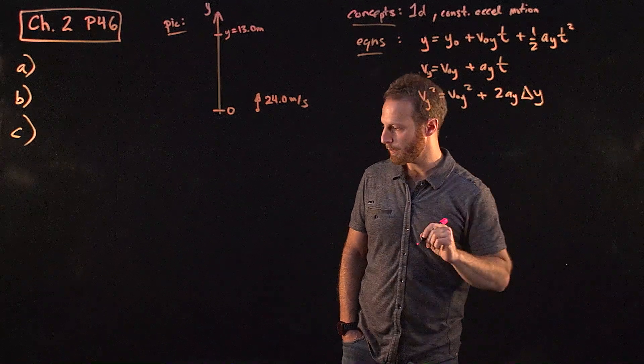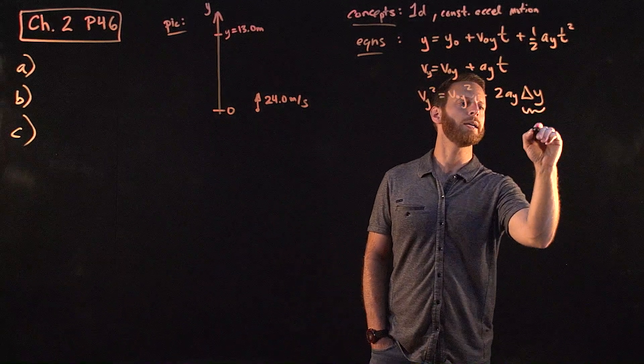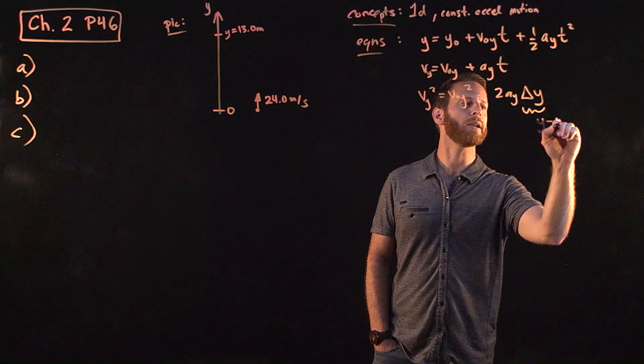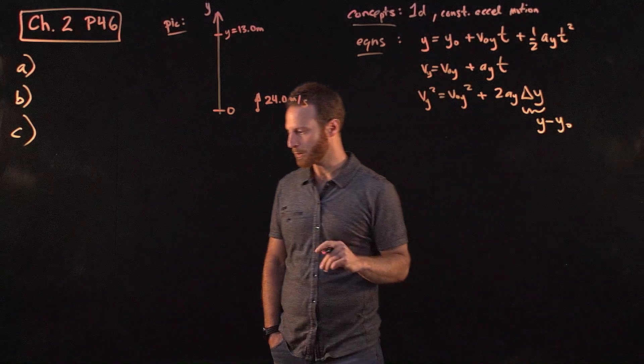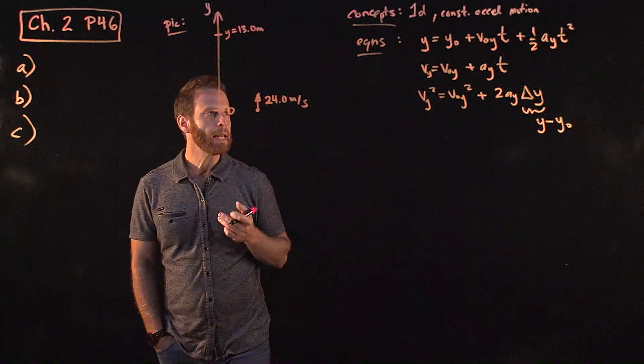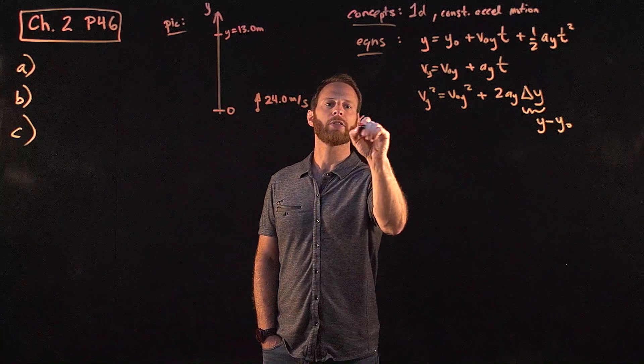Delta y. Okay. Remember that this delta y is just the final y minus the initial y. Okay? So we've got our concepts, equations, and I'm just going to go ahead and write down the things that we know, the known things that were given in the problem.